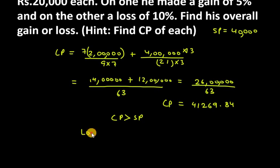It will be Rs. 41,269.84 minus Rs. 40,000, so this will be Rs. 1,269.84. The total loss is Rs. 1,269.84. So this is the answer for question number seven.